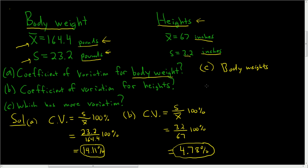But if you think about the CV, if you think about the formula, let's go back to the first example and do it a different way. Think of it this way: it's 23.2 pounds divided by 164.4 pounds times 100%. And what happens to the pounds? The pounds cancel. So the final answer is unitless.